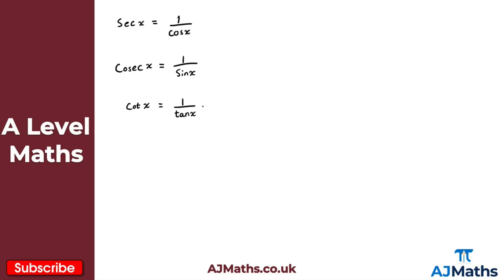Now for cot x, we can use our trig identity. Using tan x is identical to sine x over cos x. Hopefully you're familiar with this identity from first year of study. I can rewrite this as 1 over sine x over cos x. In this case, we've got 1 divided by this fraction, which is just cos x over sine x.